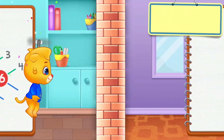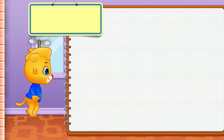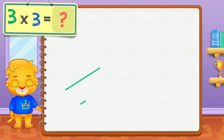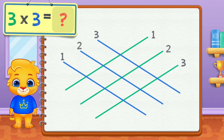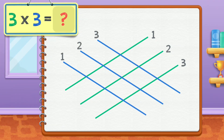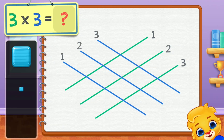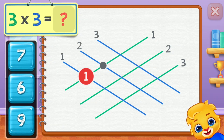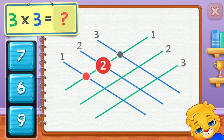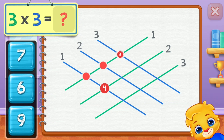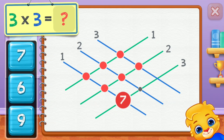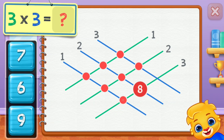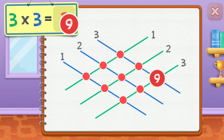Whee! Three times three equals... One, two, three, four, five, six, seven, eight, nine.